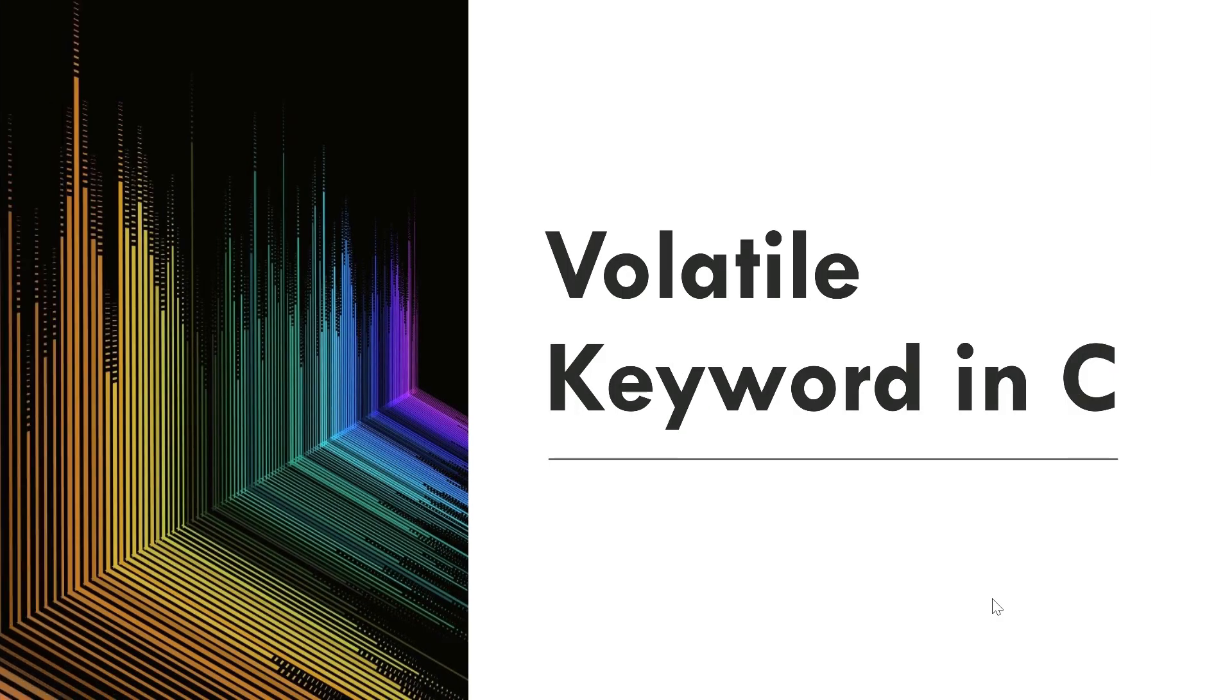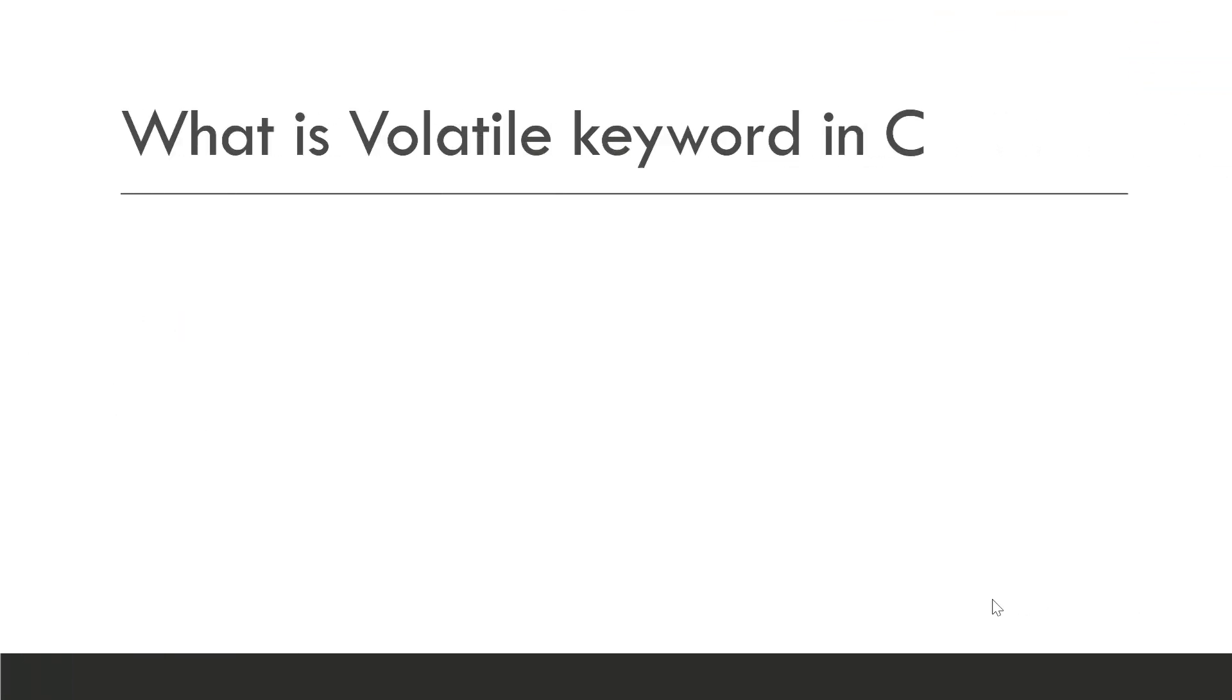Hello guys, welcome to The Embedded Guy. Today we'll talk about the volatile keyword in C. What is volatile? The volatile keyword is a qualifier for data objects like variables, structures, pointers, and arrays.